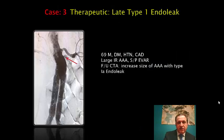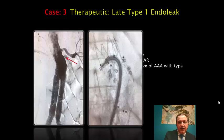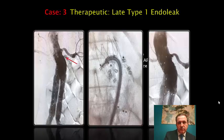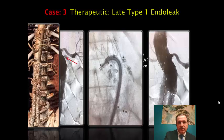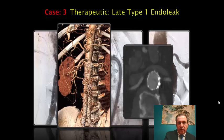Another patient was referred to us because of a late type 1A endoleak — you can see it here. This was treated very well with endo anchors, with good results and no recurrence of the type 1A endoleak at one and two years of follow-up.